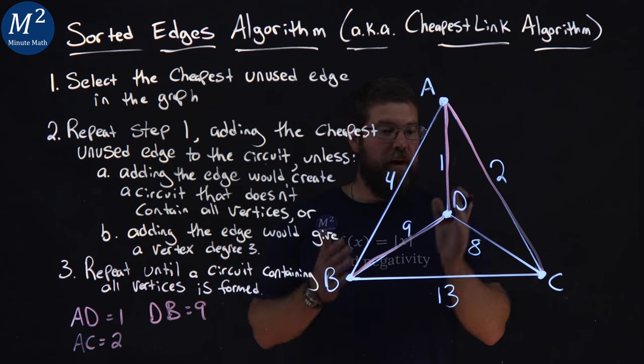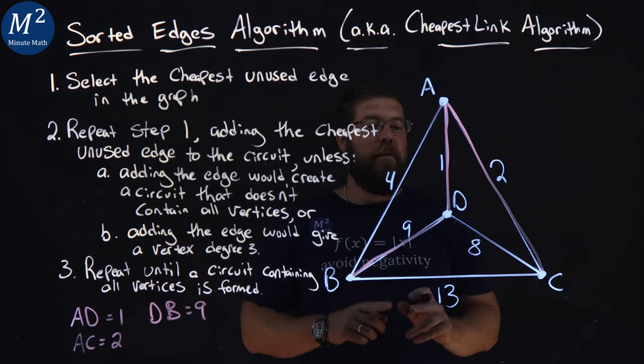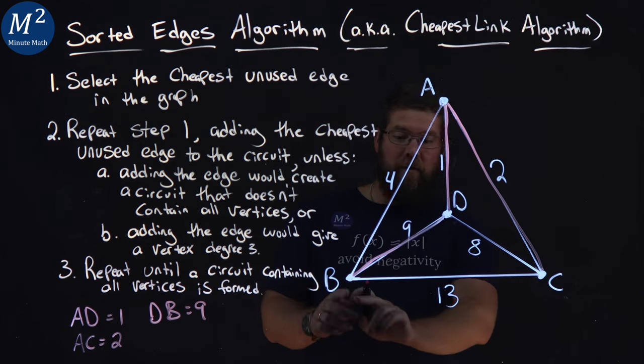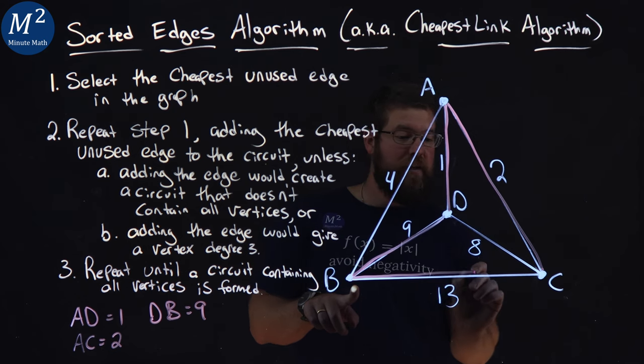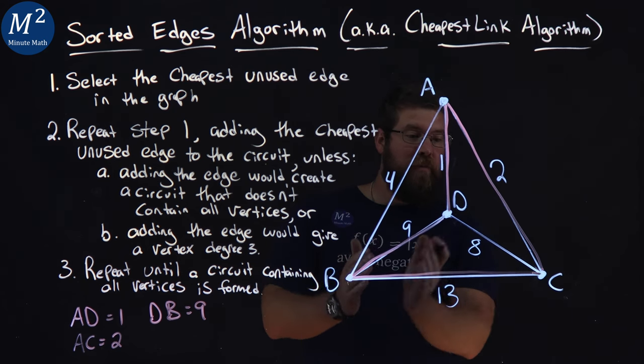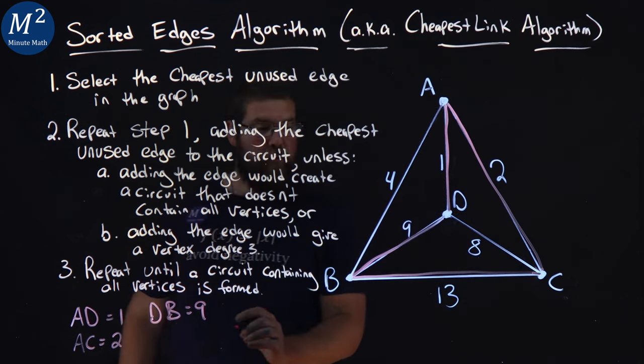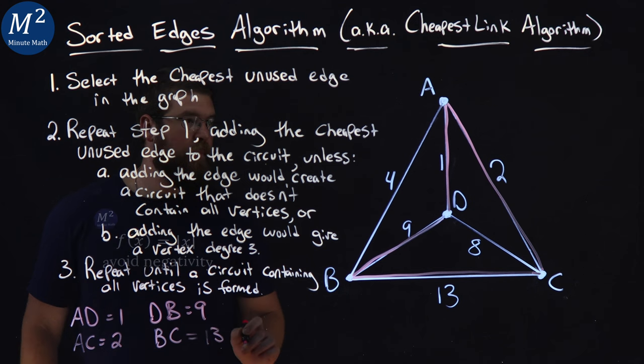Now, lastly here, I'm going to find the last edge. We already said we could not do AB. We couldn't do DC, because we could have a circuit there. We have to go BC is left here. By connecting BC, we finish. We've had every single vertex. It's the last one left. And so that would be BC, weight of 13.